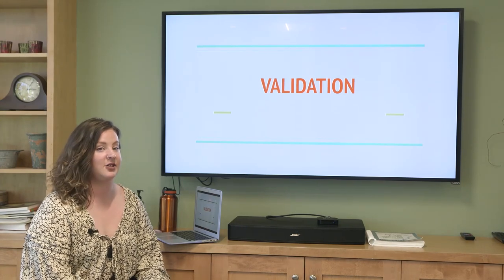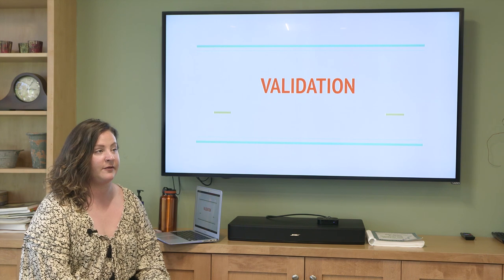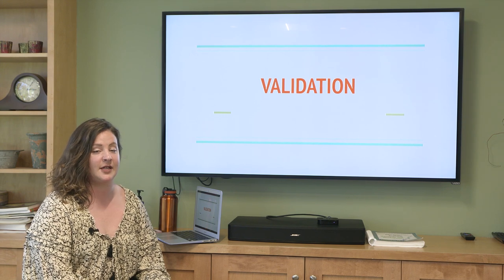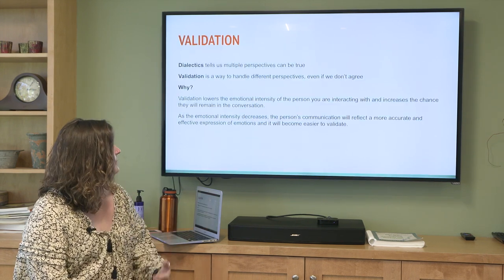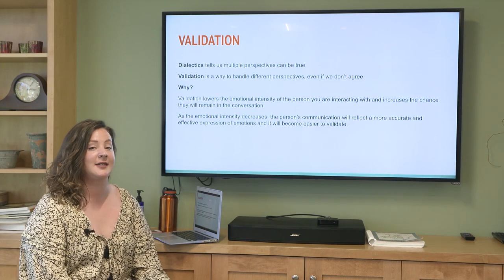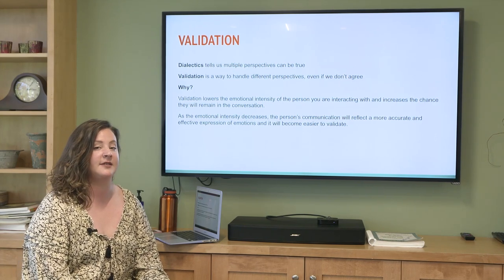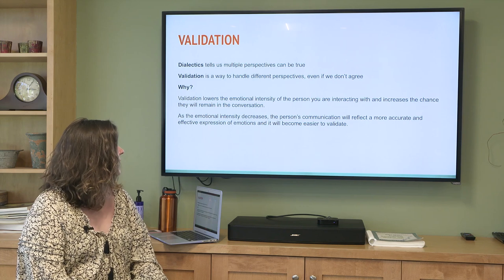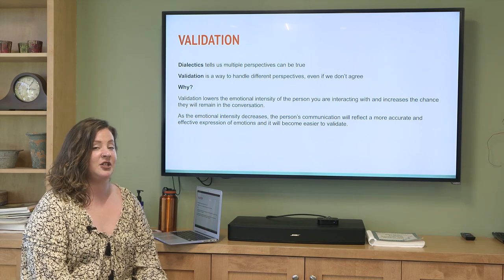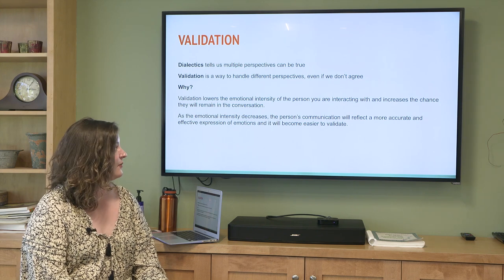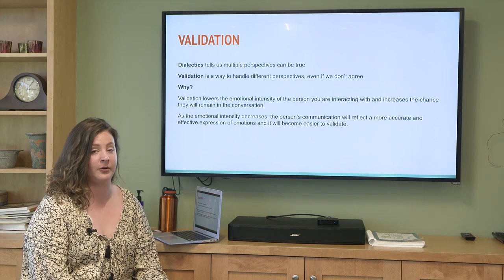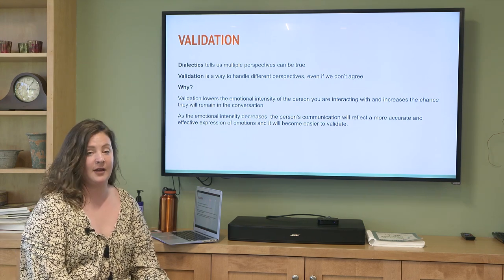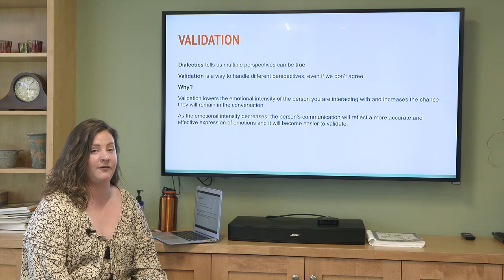The next skill we're going to talk about is validation, which I think is one of the most important and one of the more difficult skills when we talk about families and relationships. In DBT we talk about dialectics, which tell us that multiple perspectives can be true or things that seem like opposites can exist simultaneously. Validation is a way to handle and accept those different perspectives even if we don't agree with what is going on.